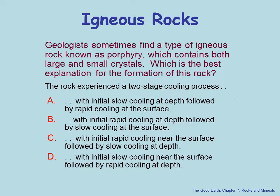Geologists sometimes find a type of igneous rock known as porphyry, which contains both large and small crystals. It had a two-stage cooling process: it initially cooled slowly, producing big crystals. You can see these in kitchen countertops — great big pink crystals of feldspar, which cooled slowly, and then the rest cooled faster. That would be a granite porphyry.